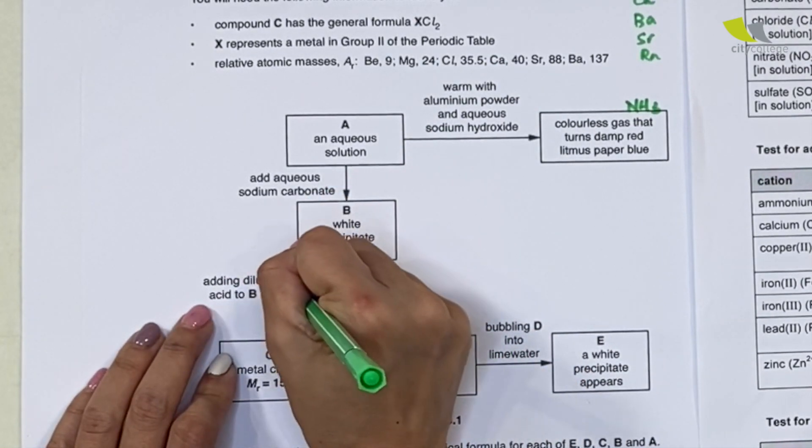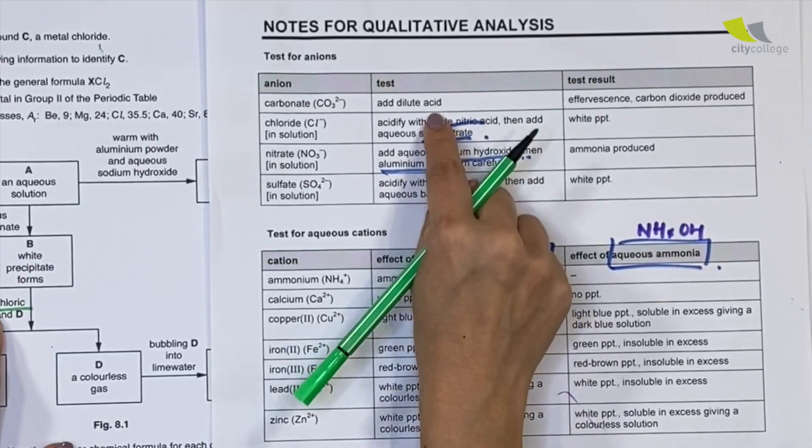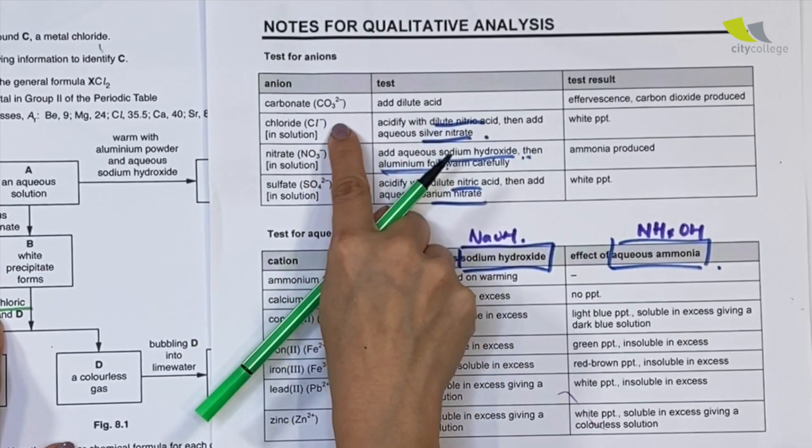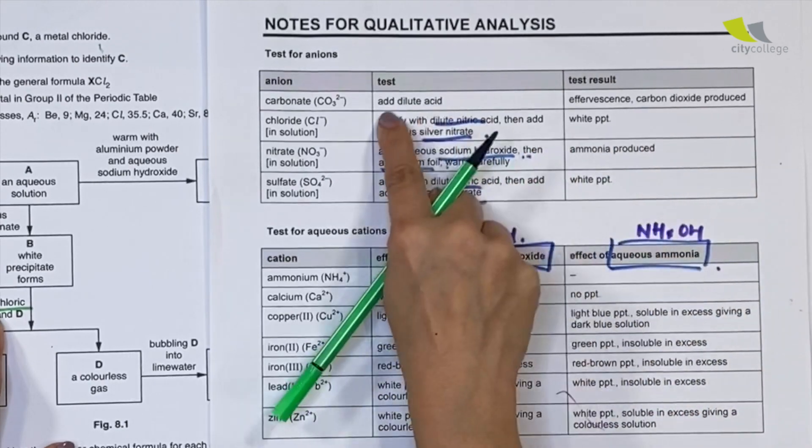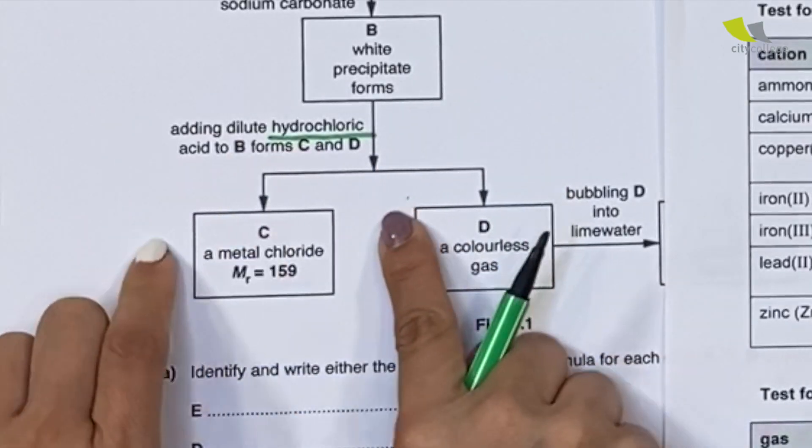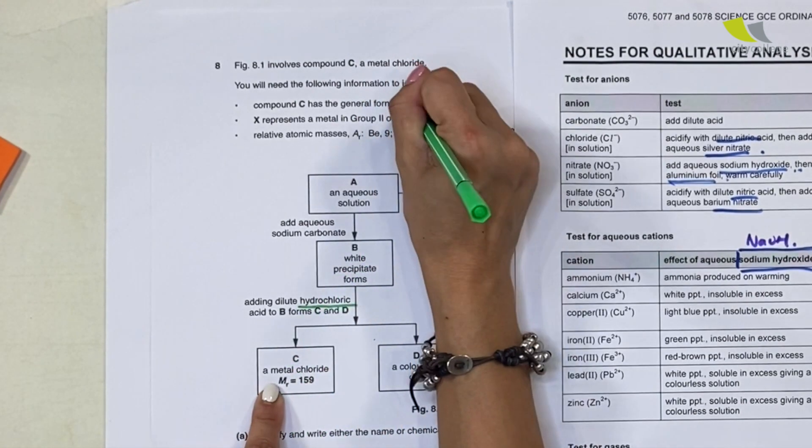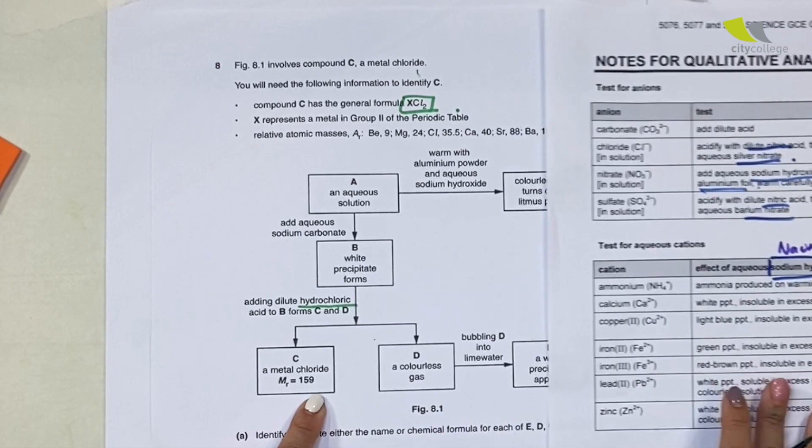They say add acid. Whenever you add acid, I remember it's a test for carbonate. Effervescence—if there's carbon dioxide, then it's carbonate. Let's move down. It gave you a metal chloride C, metal chloride Mr 159.